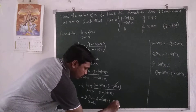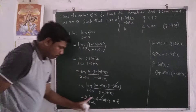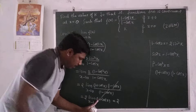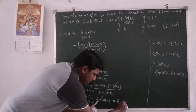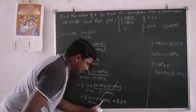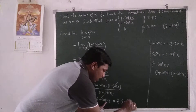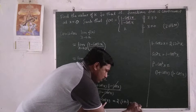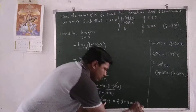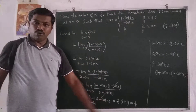Okay, applying the limit: 2 into (1 plus cos 0). Since cos 0 is 1, this is 2 into (1 plus 1) equals 2 into 2 equals 4. So the limit of the function is 4.